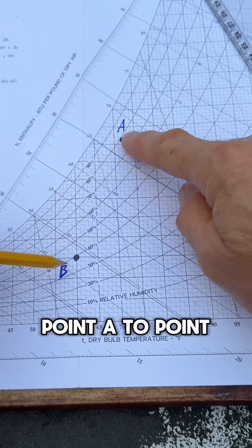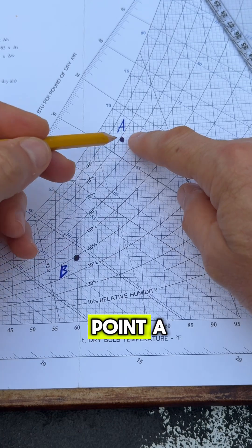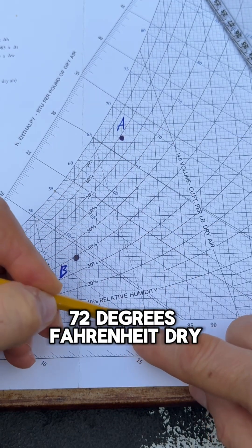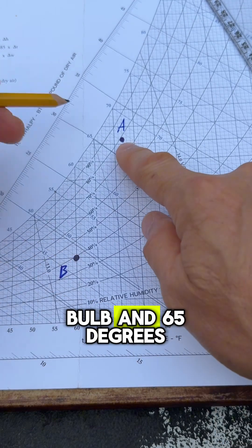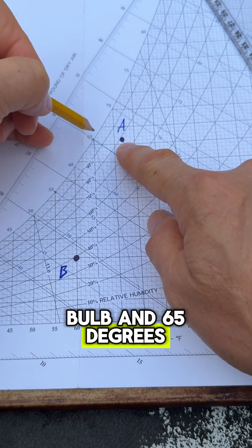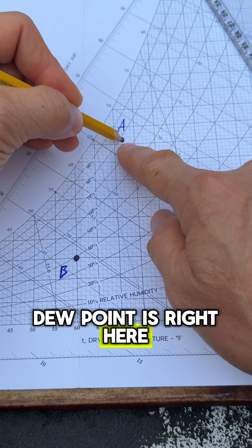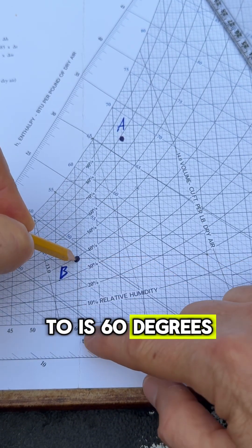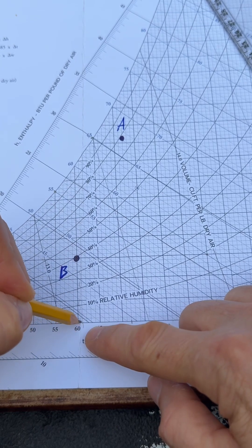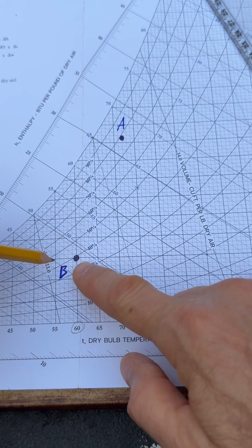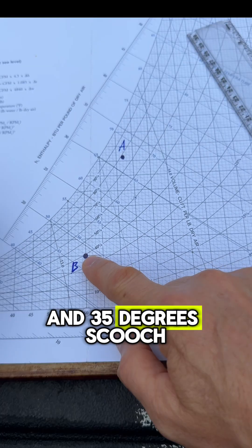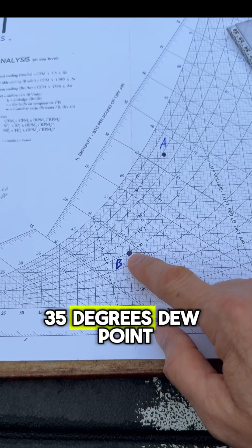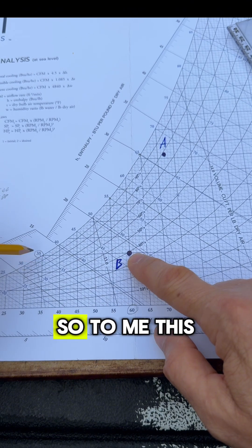Point A to point B on the chart. Point A: 72 degrees Fahrenheit dry bulb and 65 degrees dew point is right here. Our end point, what we're trying to get to, is 60 degrees dry bulb and 35 degrees dew point, which is right here.